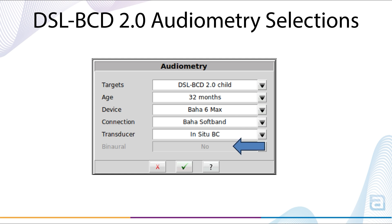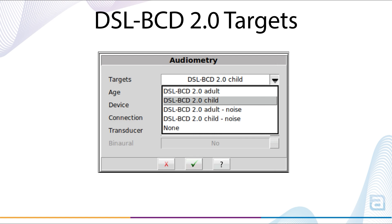Binaural is a summation factor which is only applicable to adult prescriptive targets, and it's the same as air conduction. DSL-BCD 2.0 target selections include adult, child, adult noise, and child noise. Noise targets are meant to provide listening comfort in louder situations and are not expected to improve speech recognition in noise, and none is available for instances where targets are not desired.